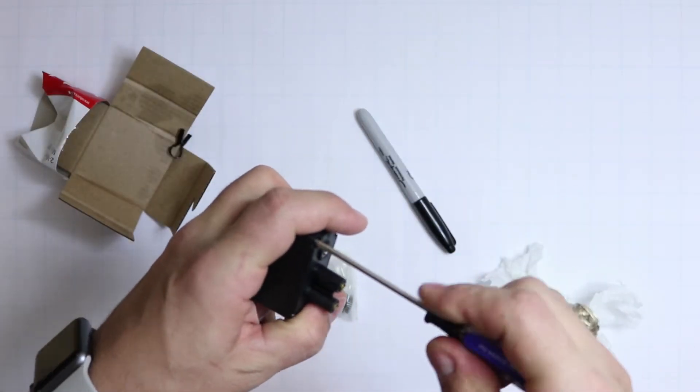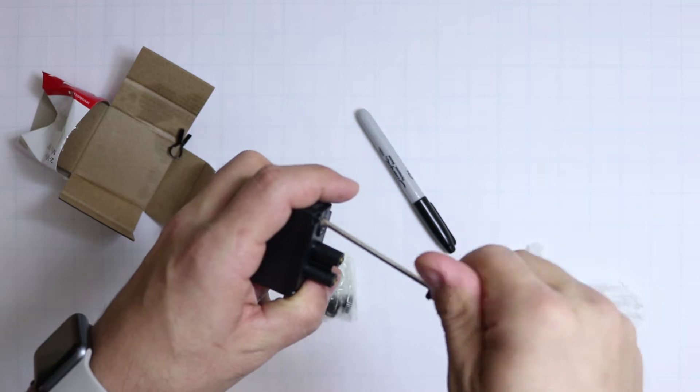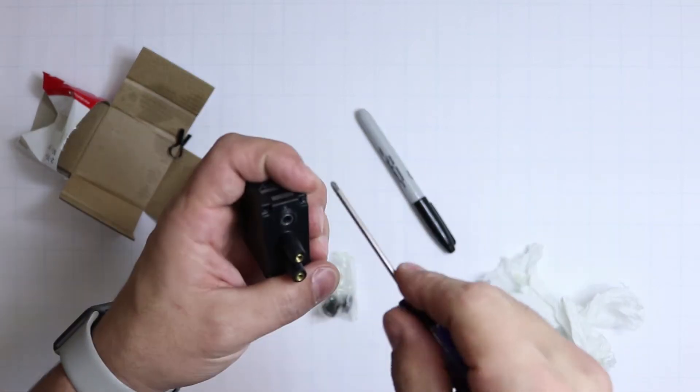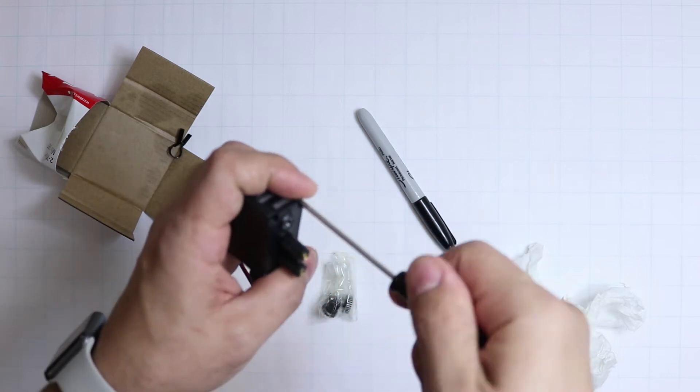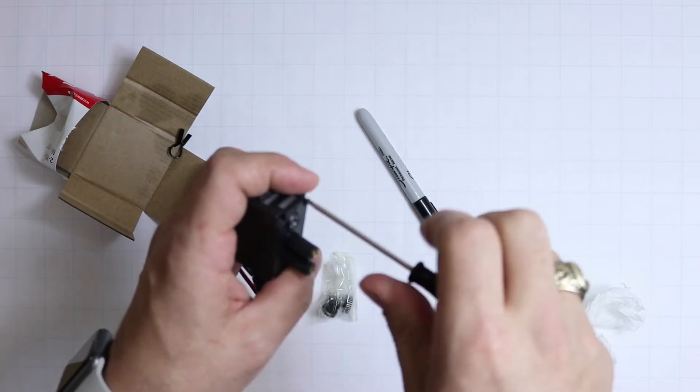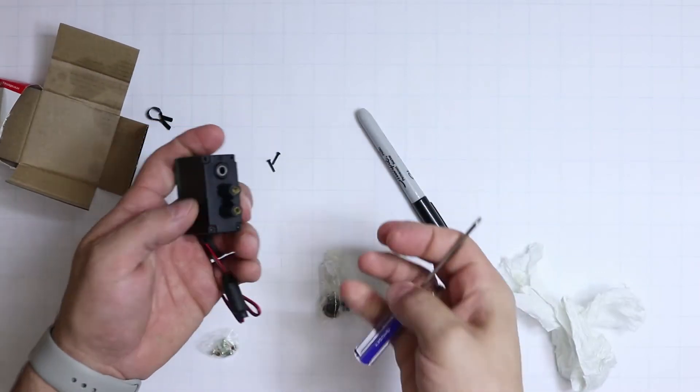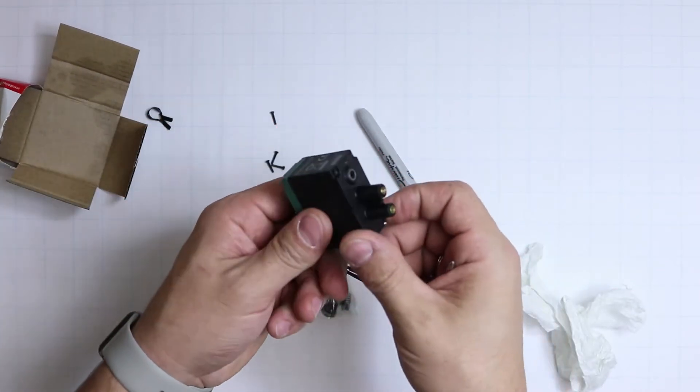We start unscrewing this front part. This front part is where those motor gears are. Inside of here, there are four sets of gears. What those do is we've got two of them in the front. Those are the ones that we can change out. We can interchange those. Set those aside. We've got all four of those screws taken out.